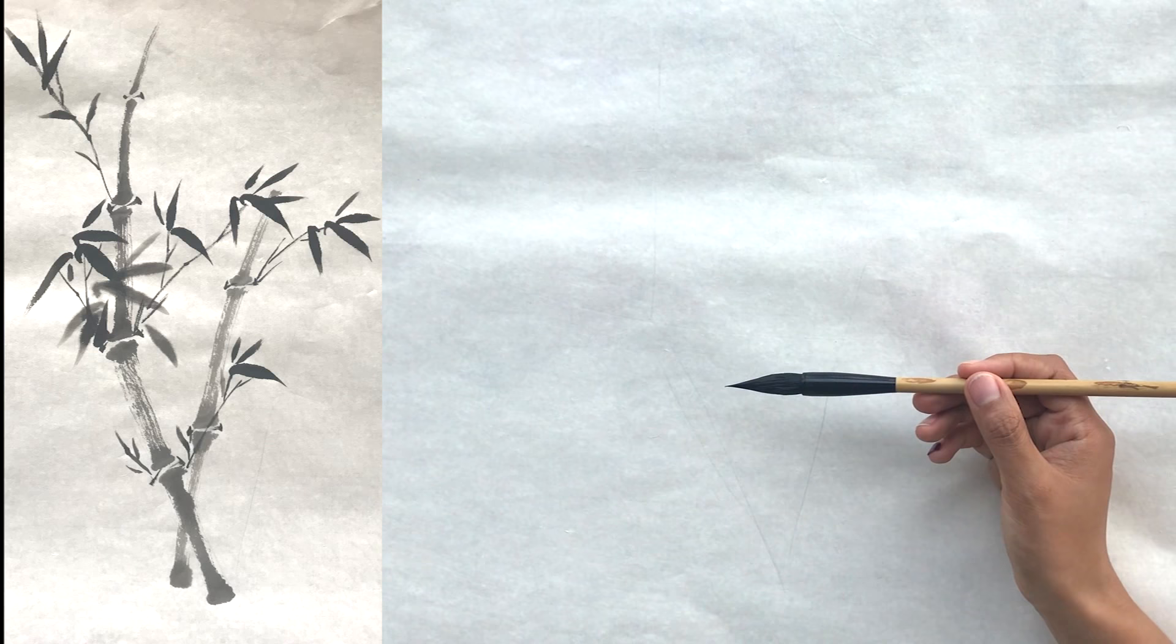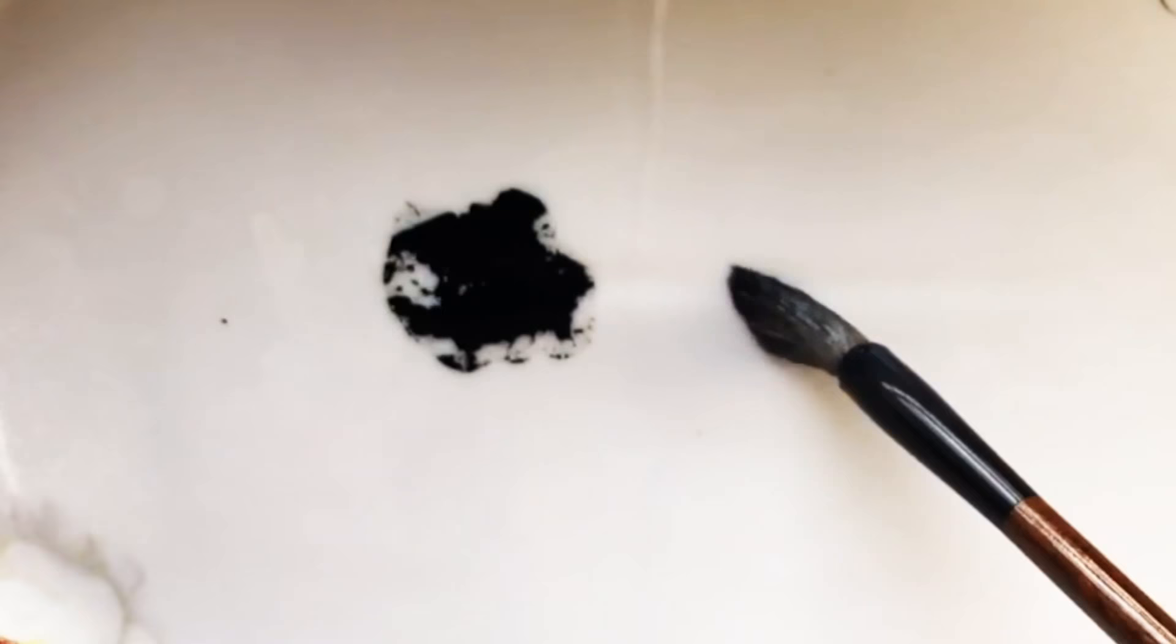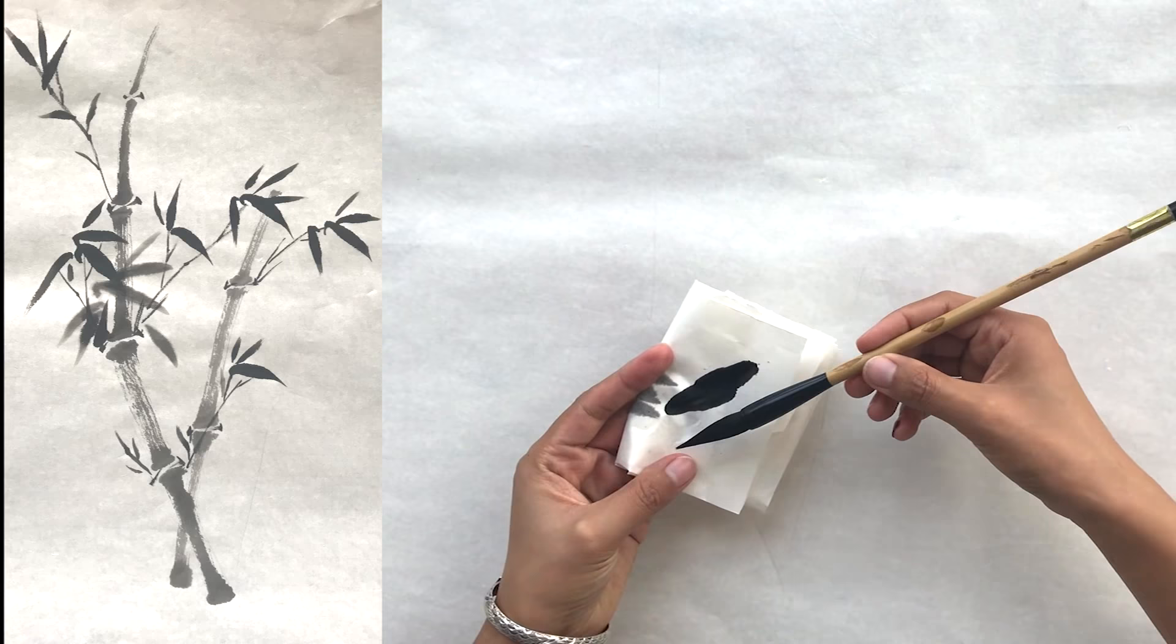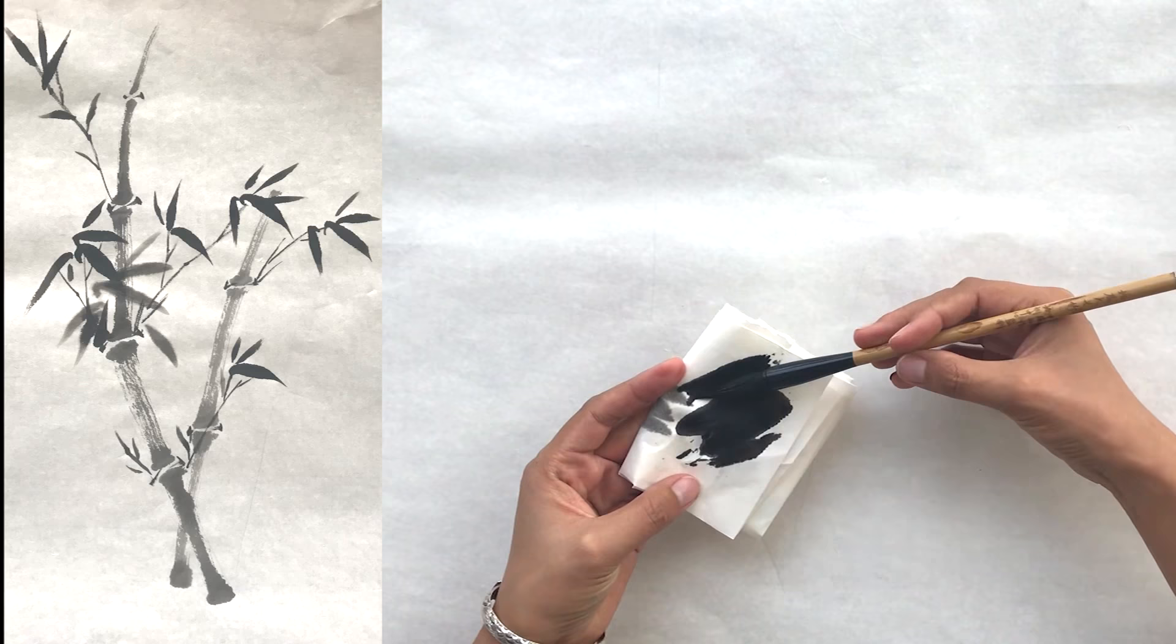Then dip your mid-sized weasel hair brush into light ink. Let it dry a little. This way the texture of the pole will come out better.